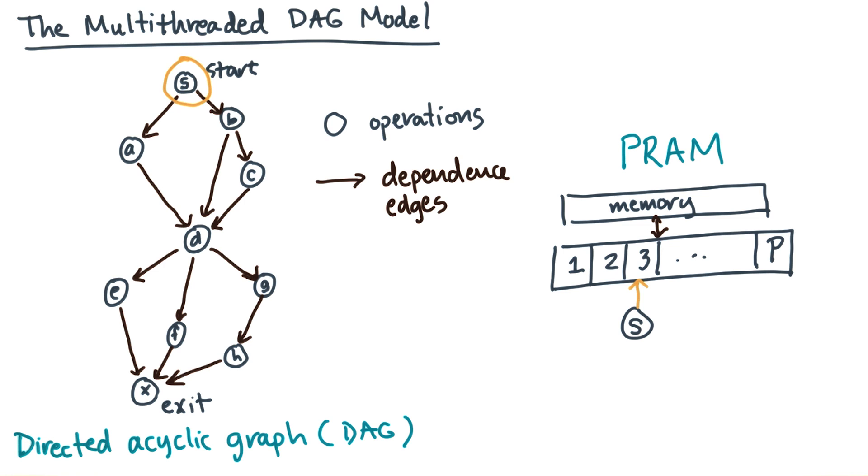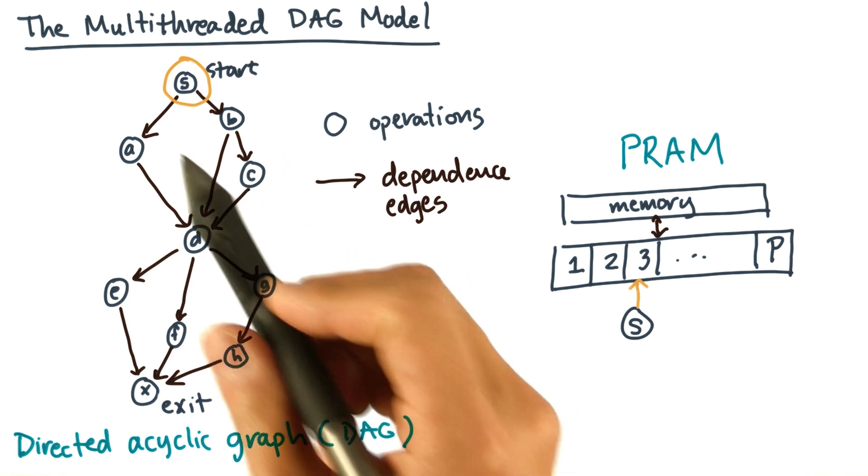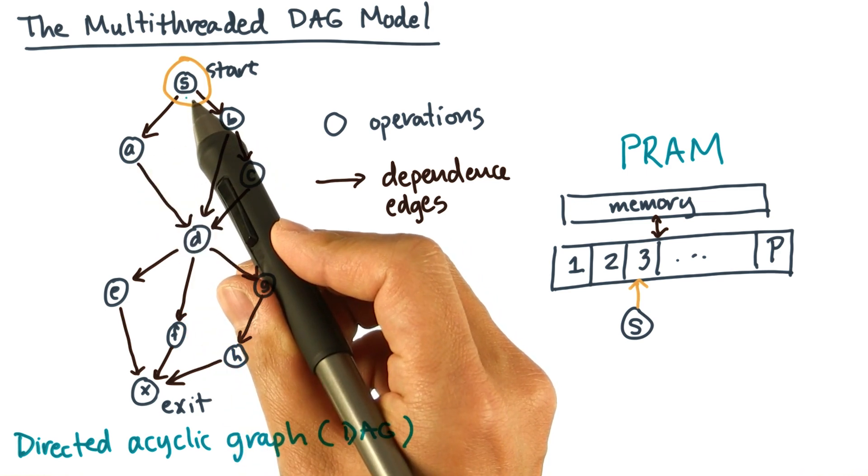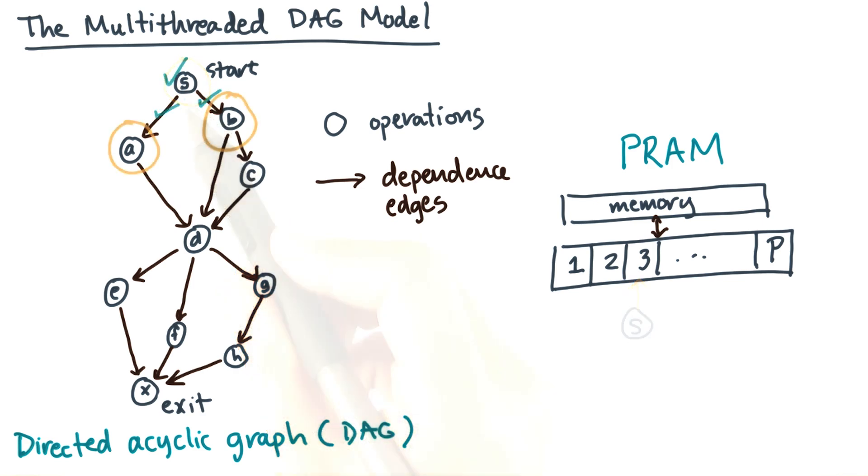Now, as soon as a processor finishes its operation, it enables any of its successors to begin. So in this example, A and B only depend on S. So as soon as S is finished, A and B can start. So now, A and B are ready to go. So we can look for any free processors and assign A and B to them.